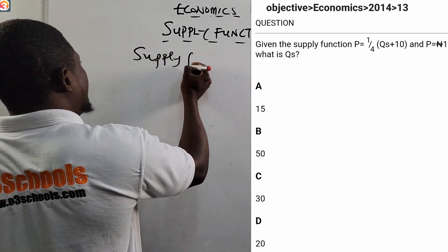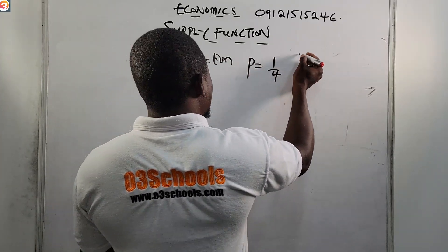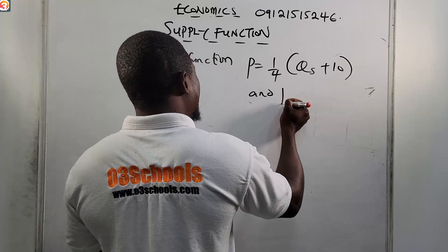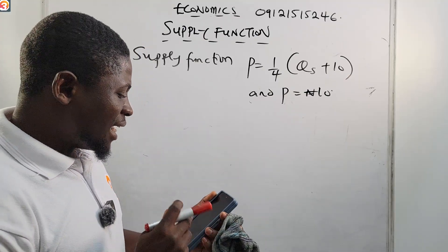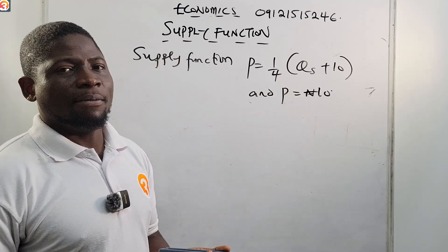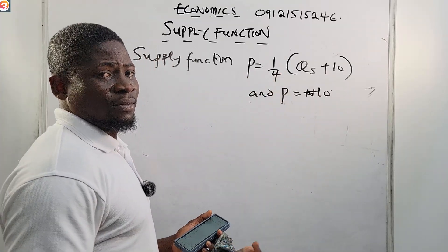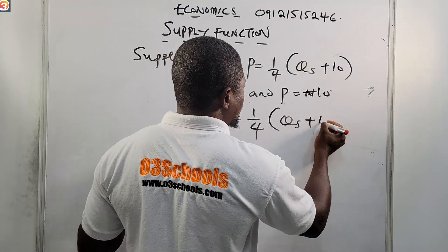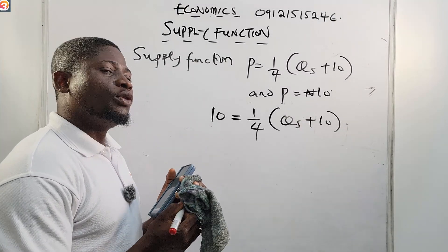We are given the supply function: P equals 1 over 4 QS plus 10. They say P equals 10 naira. What are they asking us to find? They say find QS — the quantity supplied when the price is 10 naira. Since we know price is 10 naira, we substitute: 10 equals 1 over 4 into QS plus 10. Now our knowledge of mathematics has to come into play — if you don't know your math, this is where it matters.